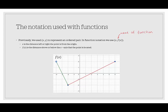And f of x represents the distance above or below the x-axis that that point is located. For example, if we look at this point here, we recognize this as 4 comma 1, where from the origin this is the x value, and then from the x-axis is the f of x value. So it's a distance of 4 from the origin, and then up 1 from the x-axis, so positive 4, positive 1.